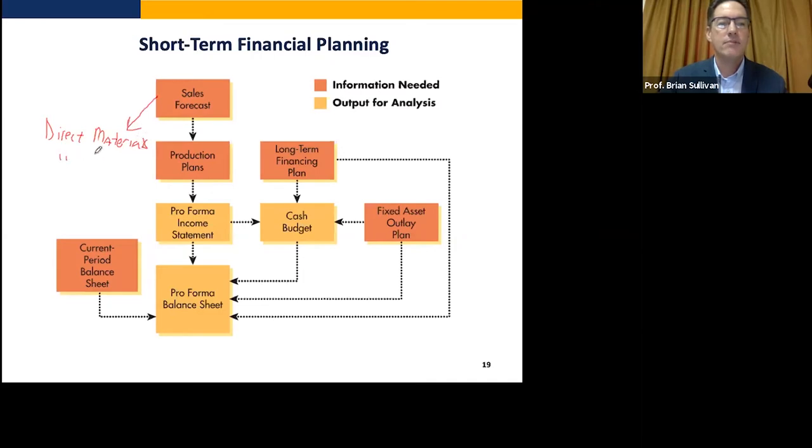And then we need also direct labor. Direct labor is the people who are actually like sewing and cutting and doing the artwork on the t-shirts. And then also within the factory, we're going to have overhead. Overhead is going to be the rent of the factory, the depreciation of the machines.